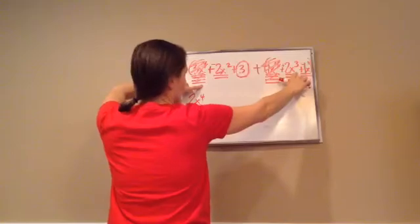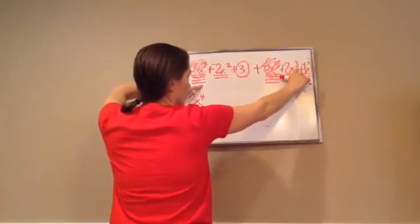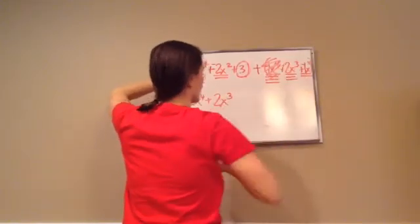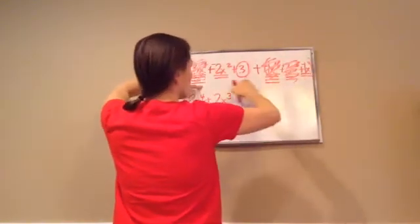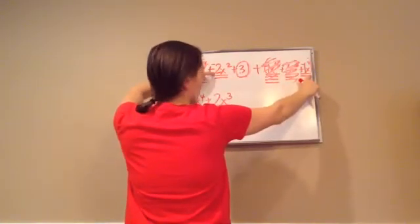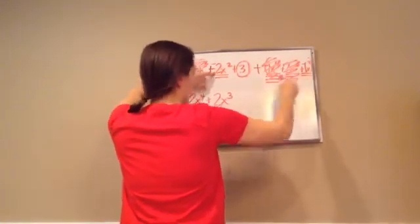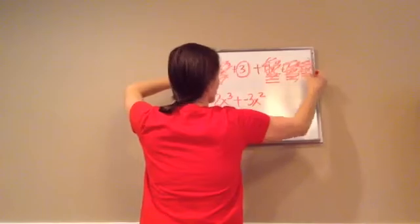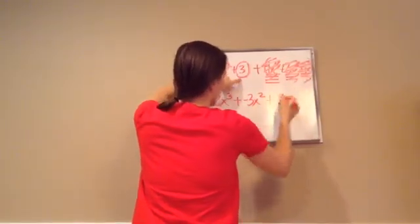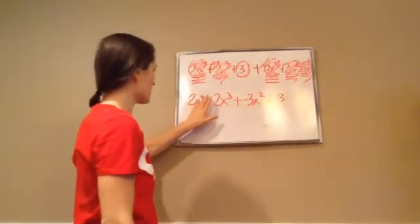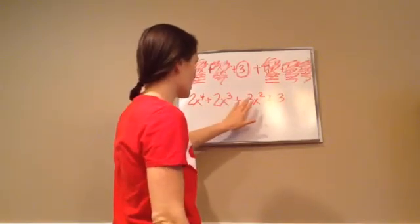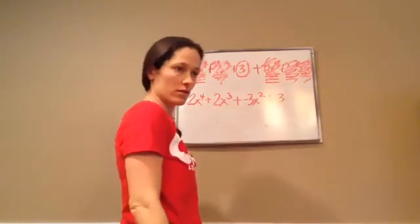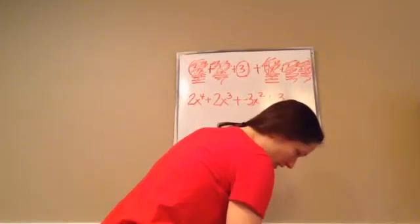Now let's do our 3's because we're writing them in descending order. I've got my negative 2x cubed — done with that one. Are there any 2's? Yes there are — this one and this one. Negative 2x squared plus a negative 1x squared becomes a negative 3x squared. Done with those. And then I have plus 3 at the end. You should have gotten 2x to the 4th power plus 2x to the 3rd power plus negative 3x squared — some people just like to put a minus right there — plus 3.